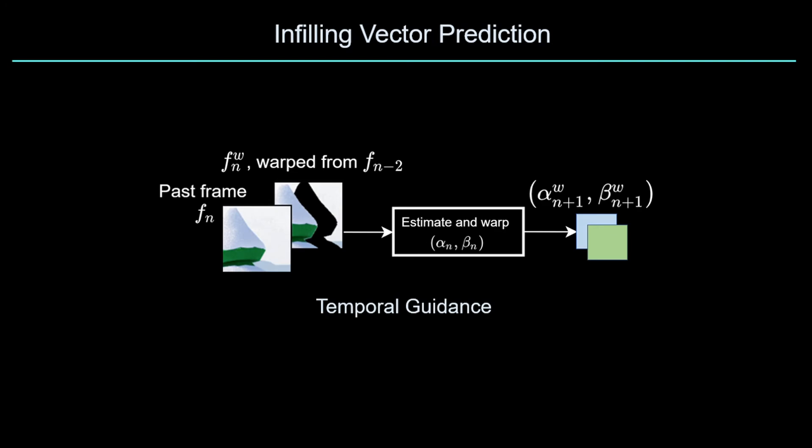We guide the infilling vector prediction process using two important cues. As ego motion in a video is correlated across time, we provide temporal guidance in the form of prior infilling vectors that were estimated from the previously rendered frames.